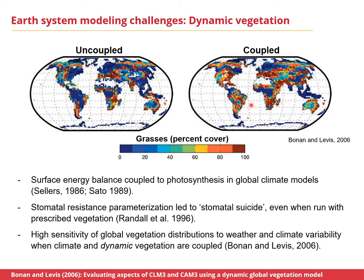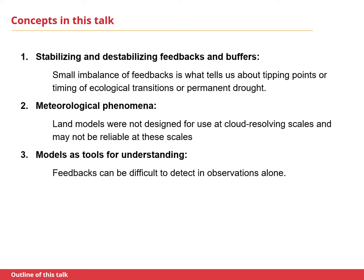This strong coupling was attributed to sensitivity of the model to small changes in precipitation. That takes me to the three concepts of this talk. The first is that feedbacks can be stabilizing or negative, and it's the small imbalance of those feedbacks that tells us about tipping points and timing of when climates may transition into more drought-like states.